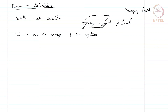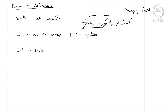If we consider a dielectric material in between these two parallel plates in the shaded region, and if we try to pull out this dielectric material along this direction, then we will have to apply some force. We need to do some work in order to bring this dielectric material out infinitesimally. If we consider that infinitesimal energy is dW — dW is the infinitesimal work to pull out the dielectric material infinitesimally.